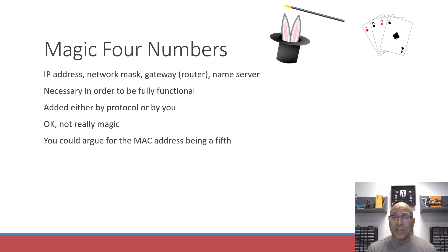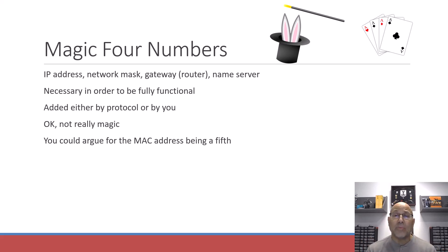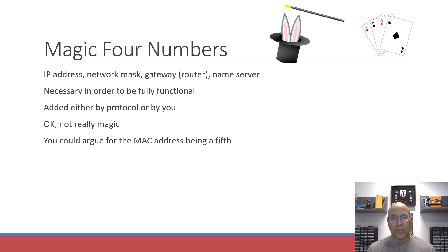These are the four you need because if you want to get around on your network, you could get away without a name server and you can get away without a router. But the minute you want to connect to the rest of the world — which is what we do on a regular basis — you need your gateway or router to get off the network, and you need a name server to resolve those names and IP addresses. These are necessary to be fully functional on a network.